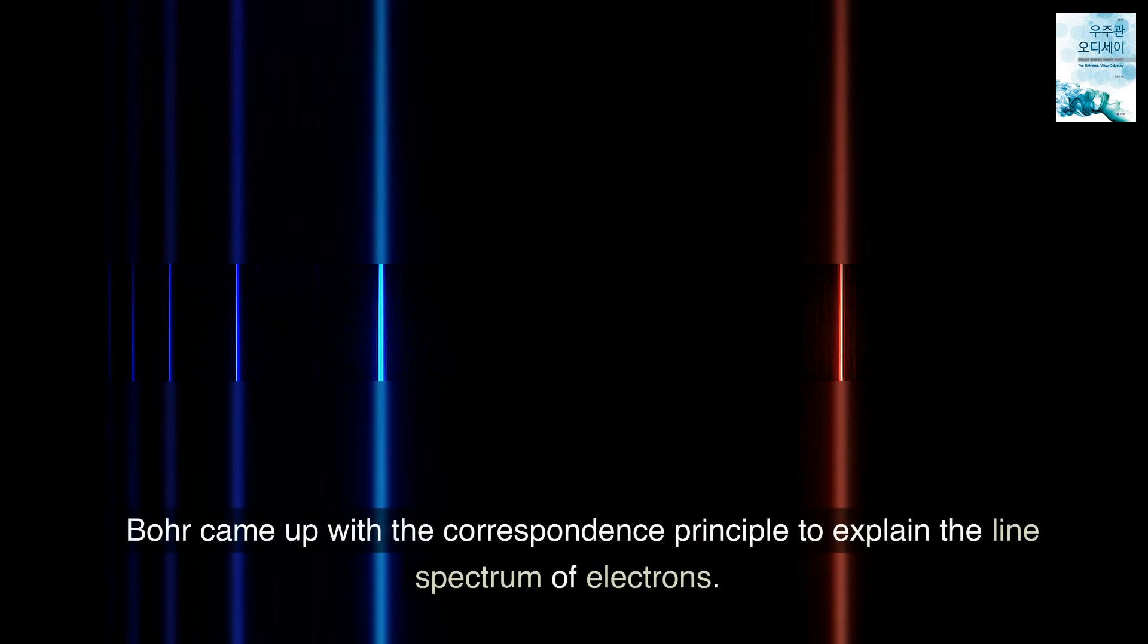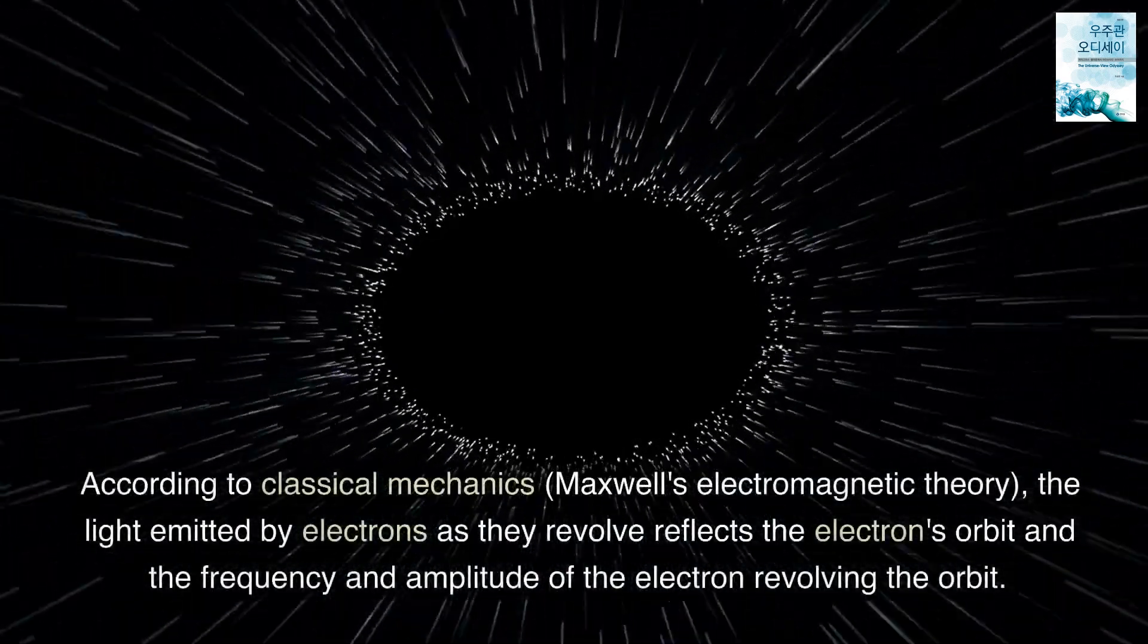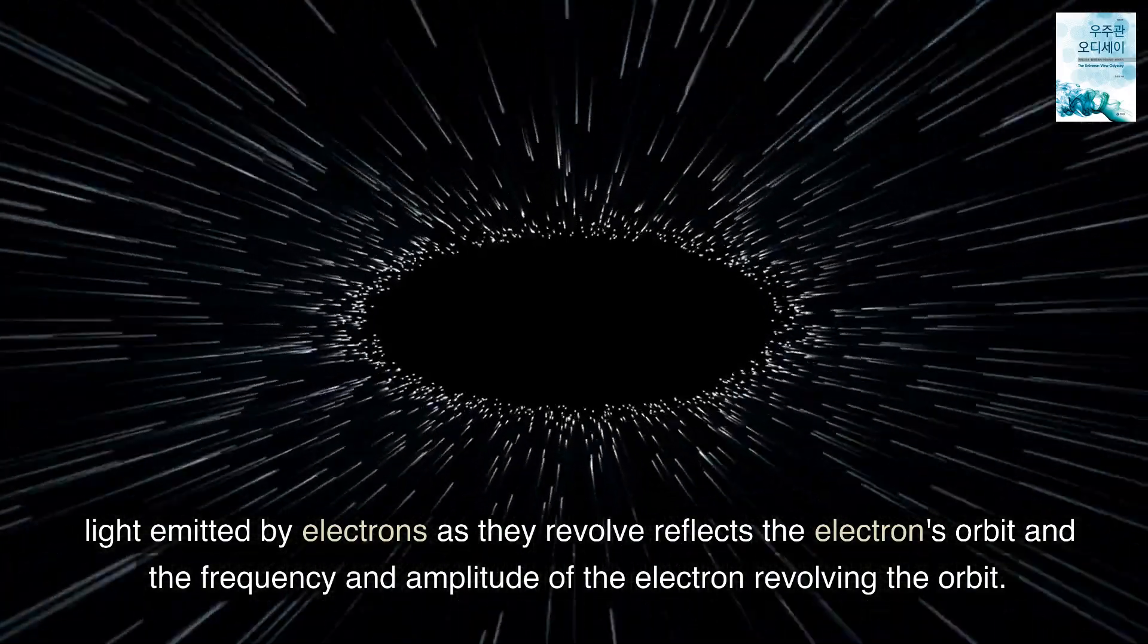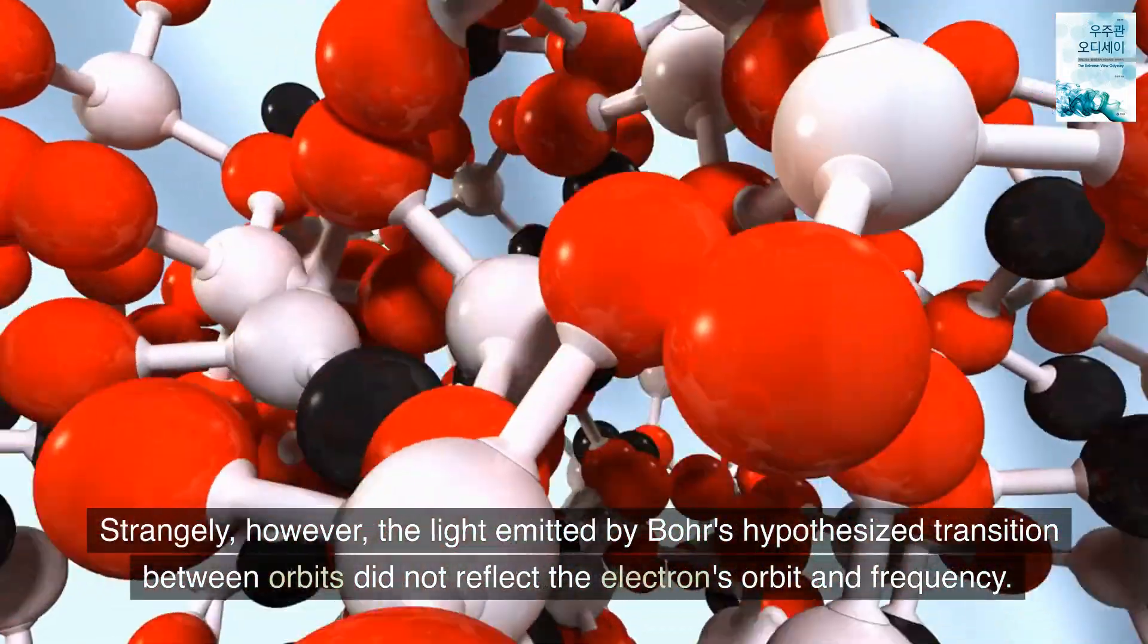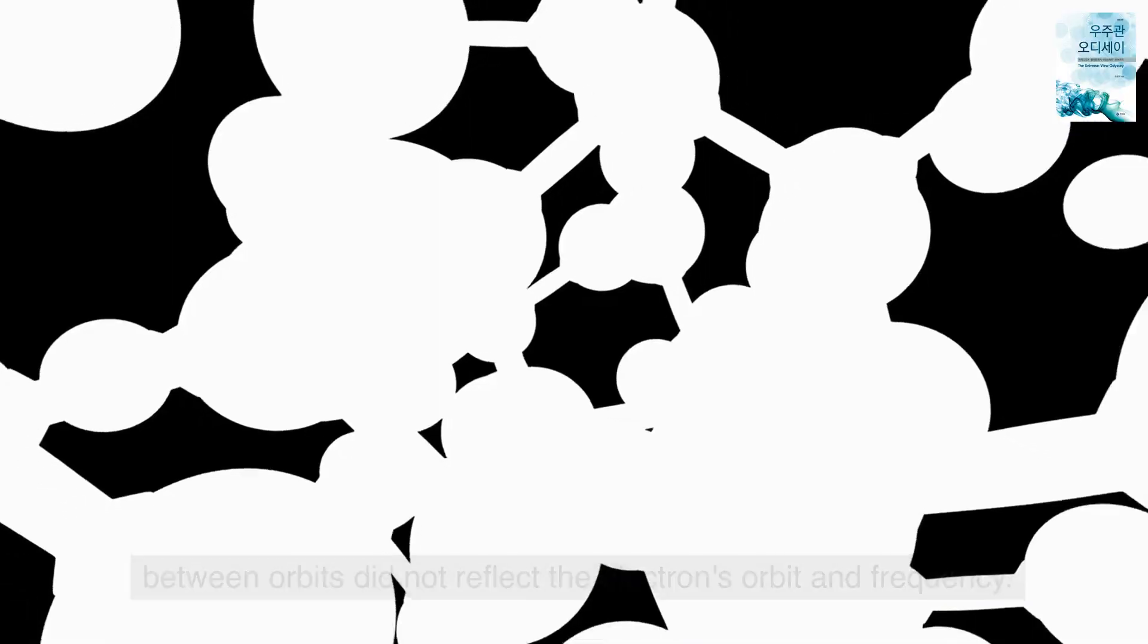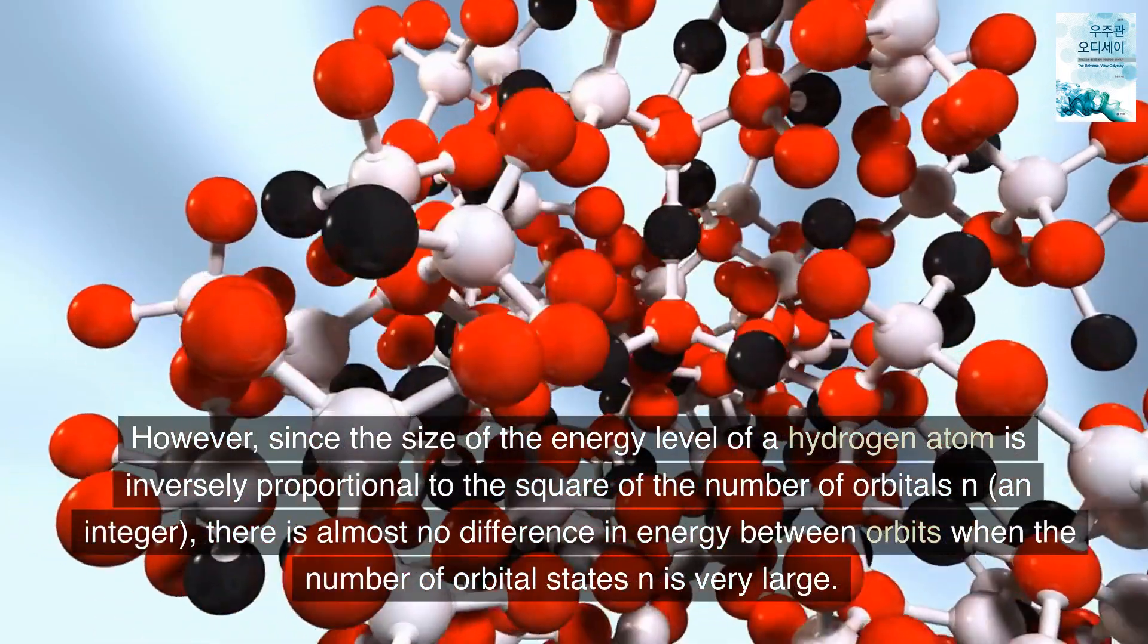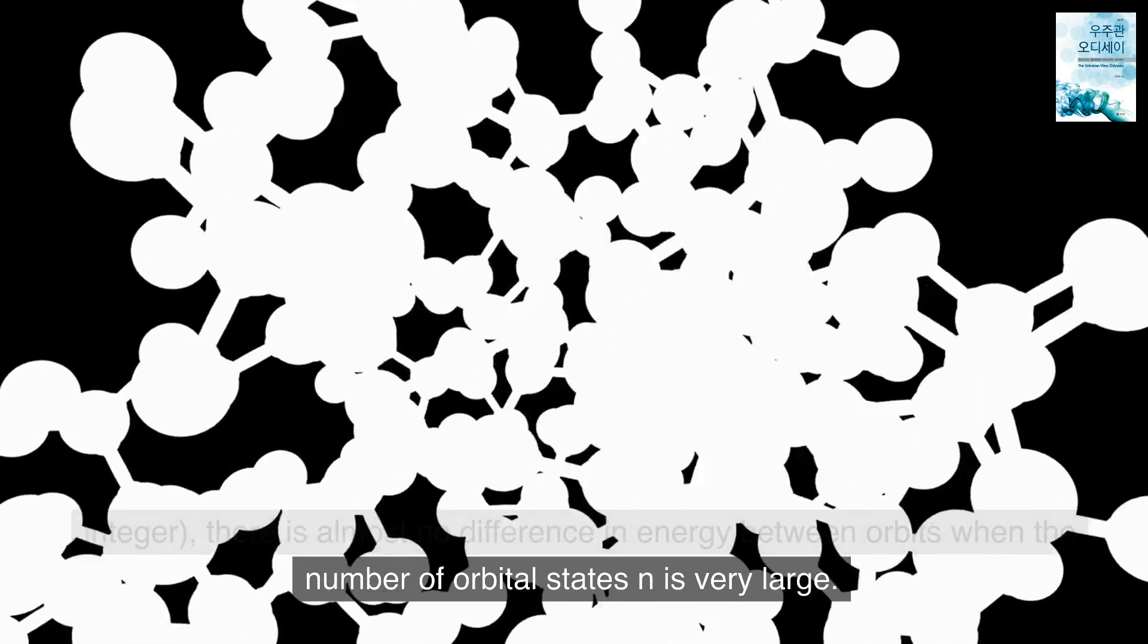Bohr came up with the correspondence principle to explain the line spectrum of electrons. According to classical mechanics, Maxwell's electromagnetic theory, the light emitted by electrons as they revolve reflects the electron's orbit and the frequency and amplitude of the electron revolving the orbit. Strangely, however, the light emitted by Bohr's hypothesized transition between orbits did not reflect the electron's orbit and frequency. However, since the size of the energy level of a hydrogen atom is inversely proportional to the square of the number of orbitals n, an integer, there is almost no difference in energy between orbits when the number of orbital states n is very large.